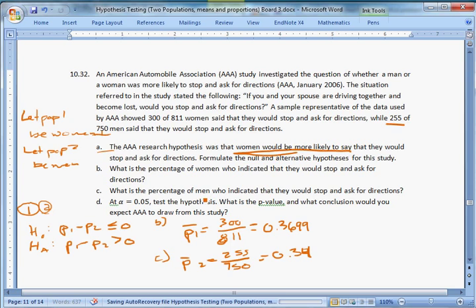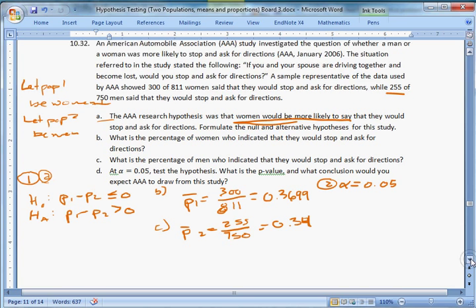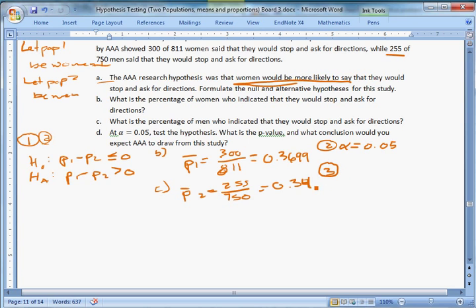Part D is asking us to test the hypothesis at the 5% level. So step 2 is to state our level of significance, 0.05. And step 3 is going to be to choose our test statistic. Now, because of what we know about the sampling distribution of differences in population proportions, we can use a z-test statistic that looks like this: P bar 1 minus P bar 2 over square root of P bar times 1 minus P bar times the quantity 1 over N1 plus 1 over N2.